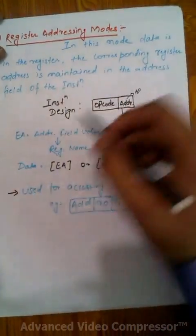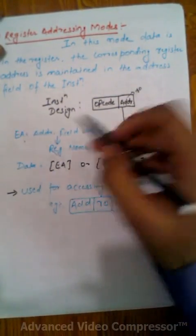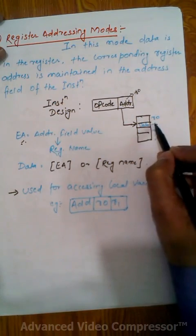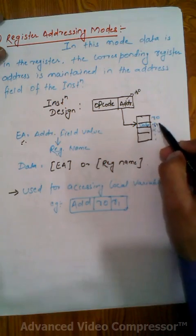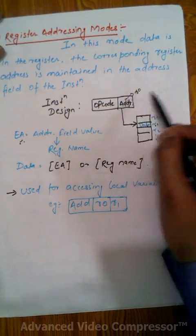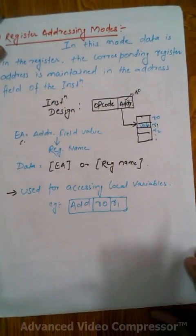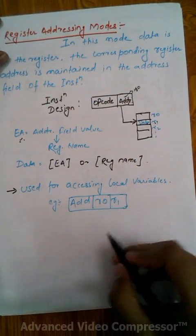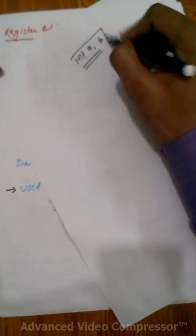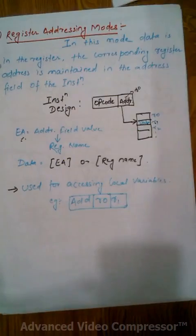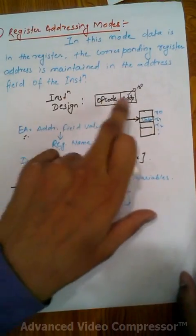The effective address is the address where your data is present. So if data is at R1, the effective address is R1. In register addressing mode, the effective address is the address field value — R0, R1, R2, or R3. Register addressing mode is used for accessing local variables, such as when you use the register keyword in a C program to store values in a register.